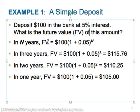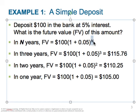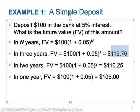The future value of some sum is calculated by taking the amount you're going to put in the bank, adding that as 1, adding the interest rate, and doing that exponentially times the number of years you want to cover. If you want to cover 3 years, you put 3 there; for 2 years, you put 2; for 1 year, you don't need an exponent. It tells you how much money you'll have in that many years.